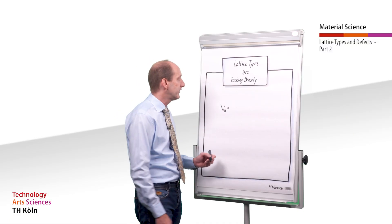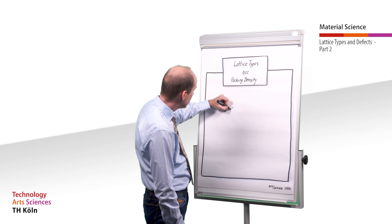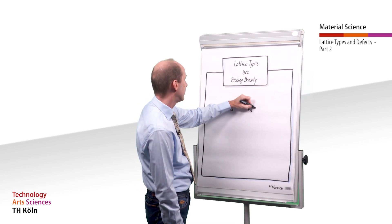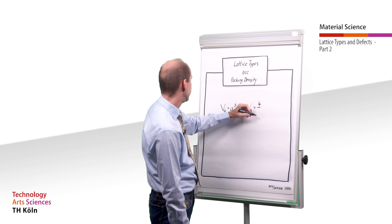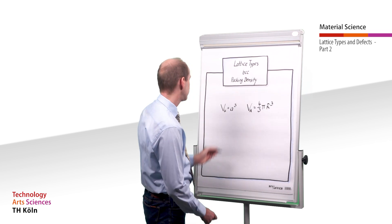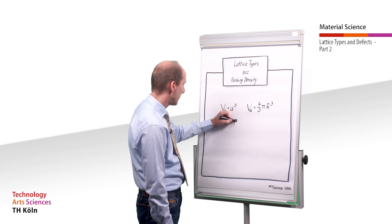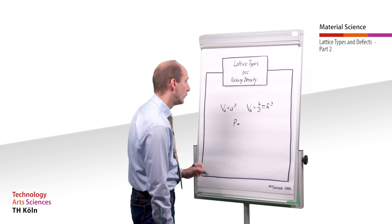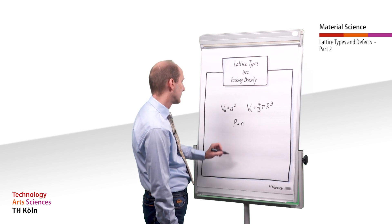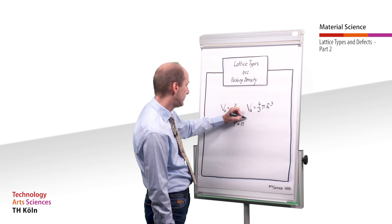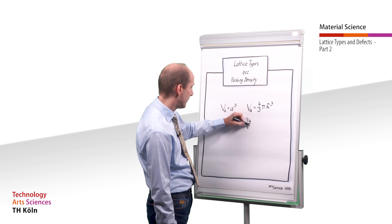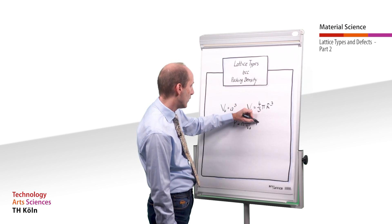VU, the volume of the unit cell, is calculated as A to the power of 3. VA, the volume of the atom, is calculated according to the well-known formula for determining the volume of a sphere. The packing density P — that is the volume filled by atoms within the unit cell — is calculated by multiplying the number of atoms N in the unit cell by the volume of the atom, divided by the volume of the unit cell, times 100%.